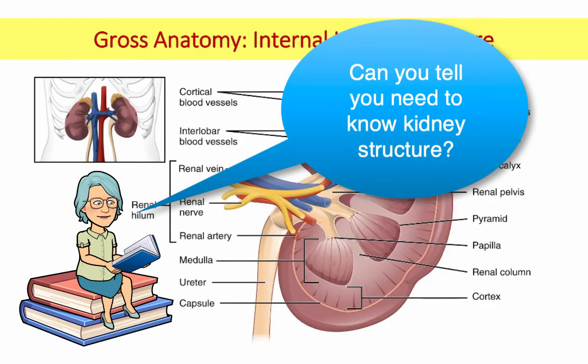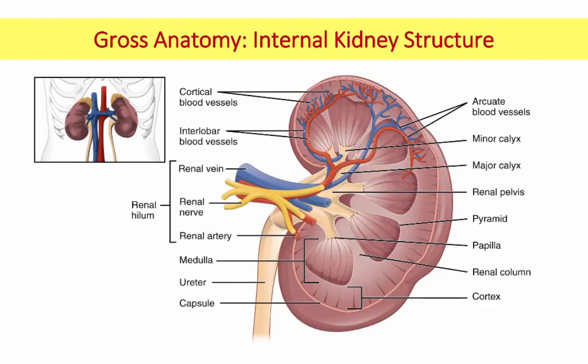So we've got the renal vein, renal artery, and there's also a renal nerve — which is why you can tell if you have a kidney stone. I haven't had one, but someone I know gets them and says she'd rather have babies, it's that painful. So you have calyces that drain into the pelvis, which drains into the ureter, which fills the bladder, which is drained by the urethra.